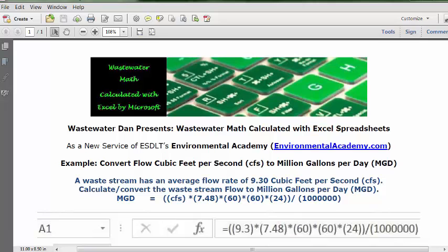So we have a flow rate conversion problem which uses approximately five conversion factors. We want Excel to do all these calculations for us, so I'm going to set up a formula solving for MGD and starting with CFS